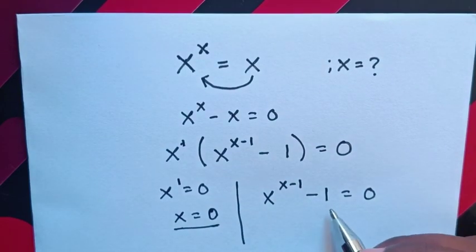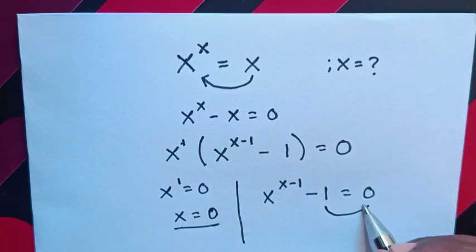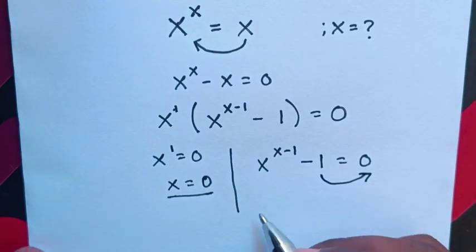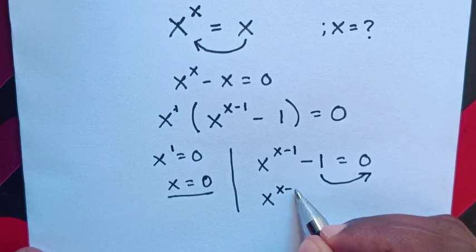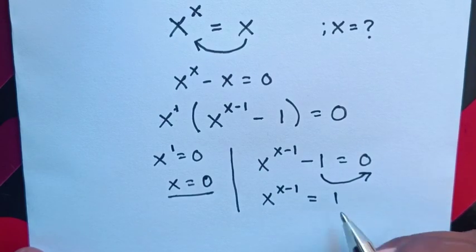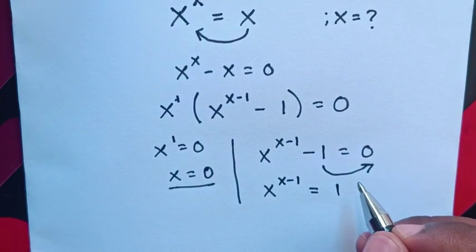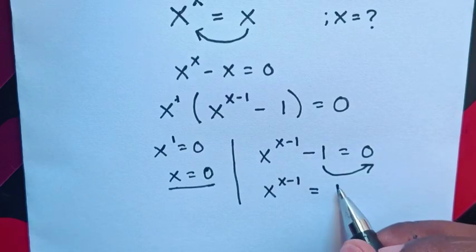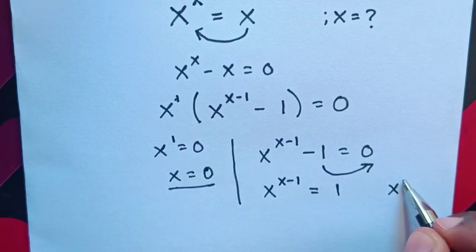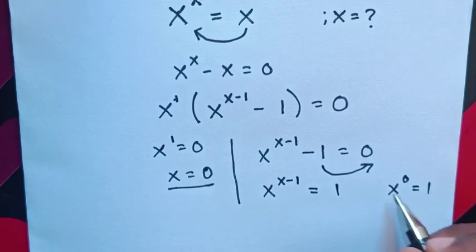And in here, we take minus 1 to the right side, so it will be x^(x-1) = 1. Then, from here, x^0 = 1.